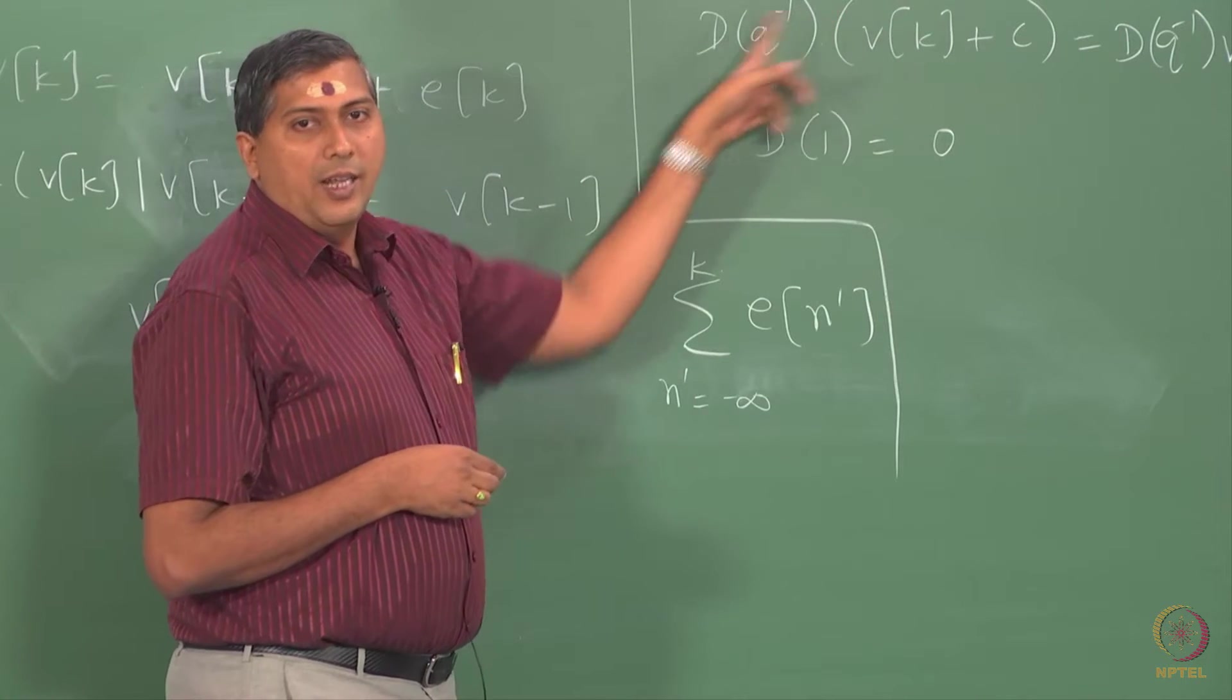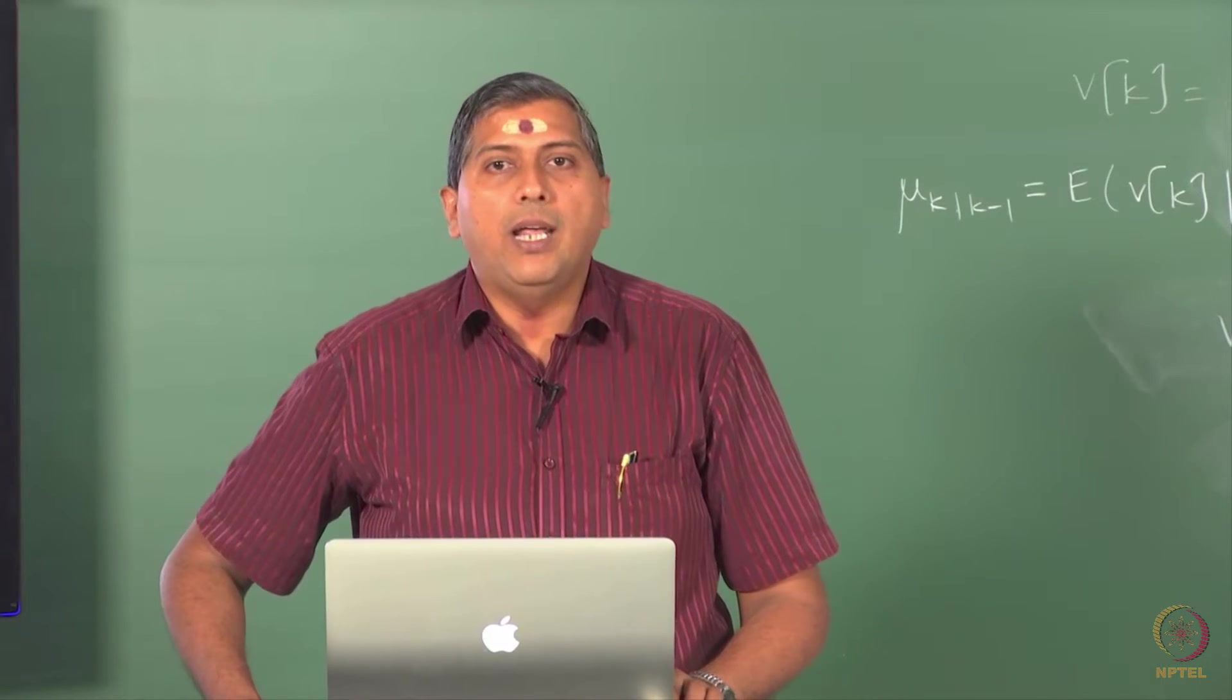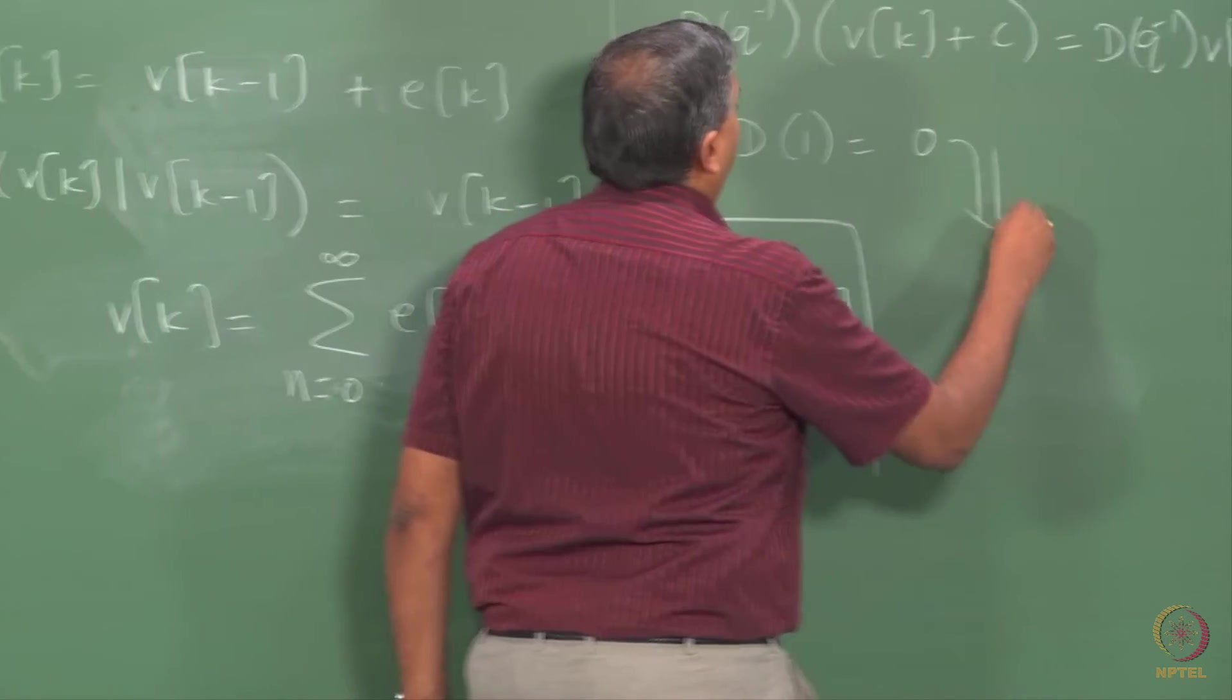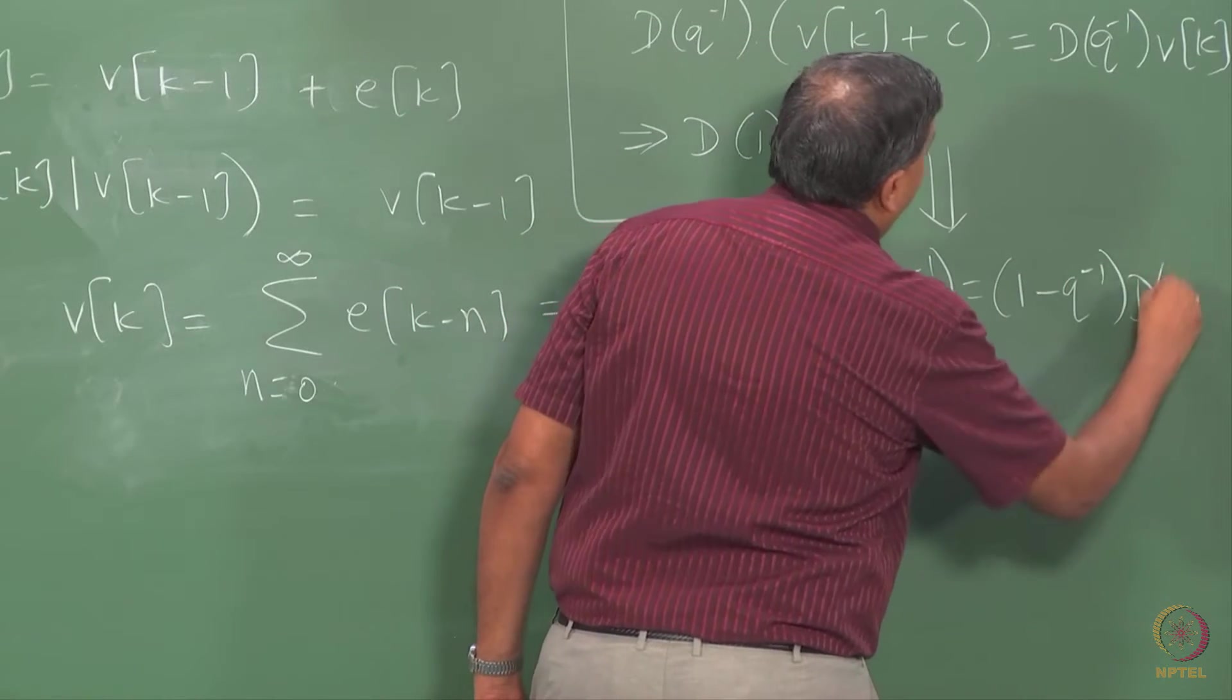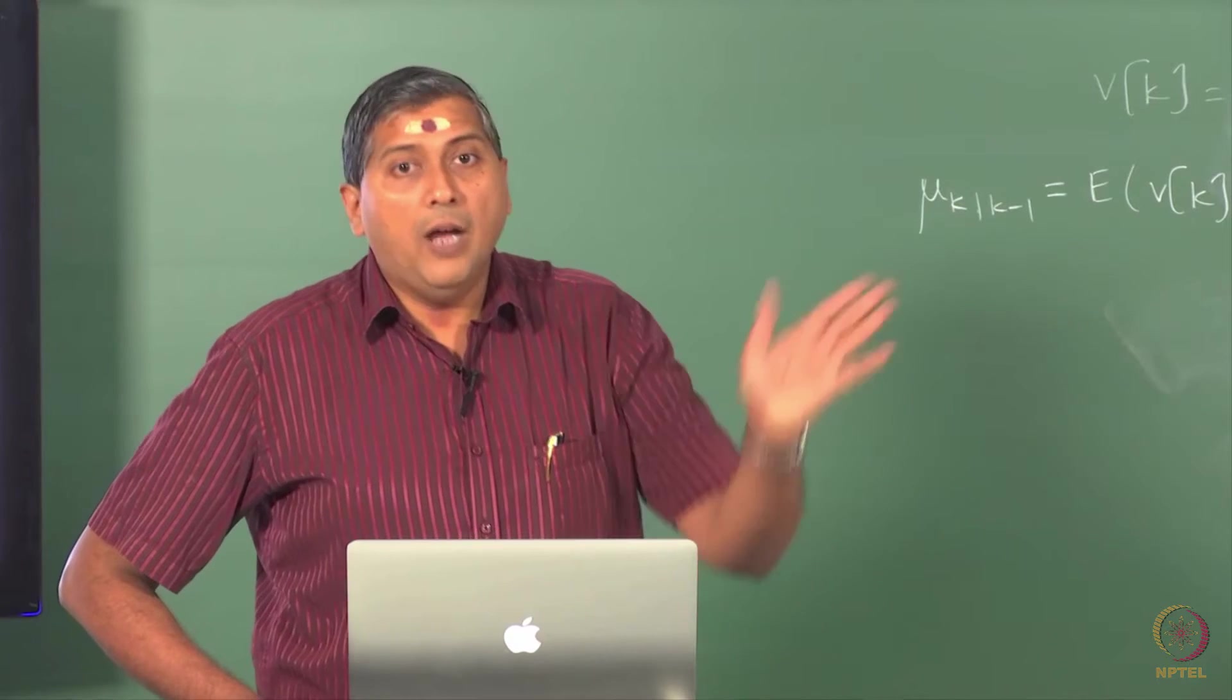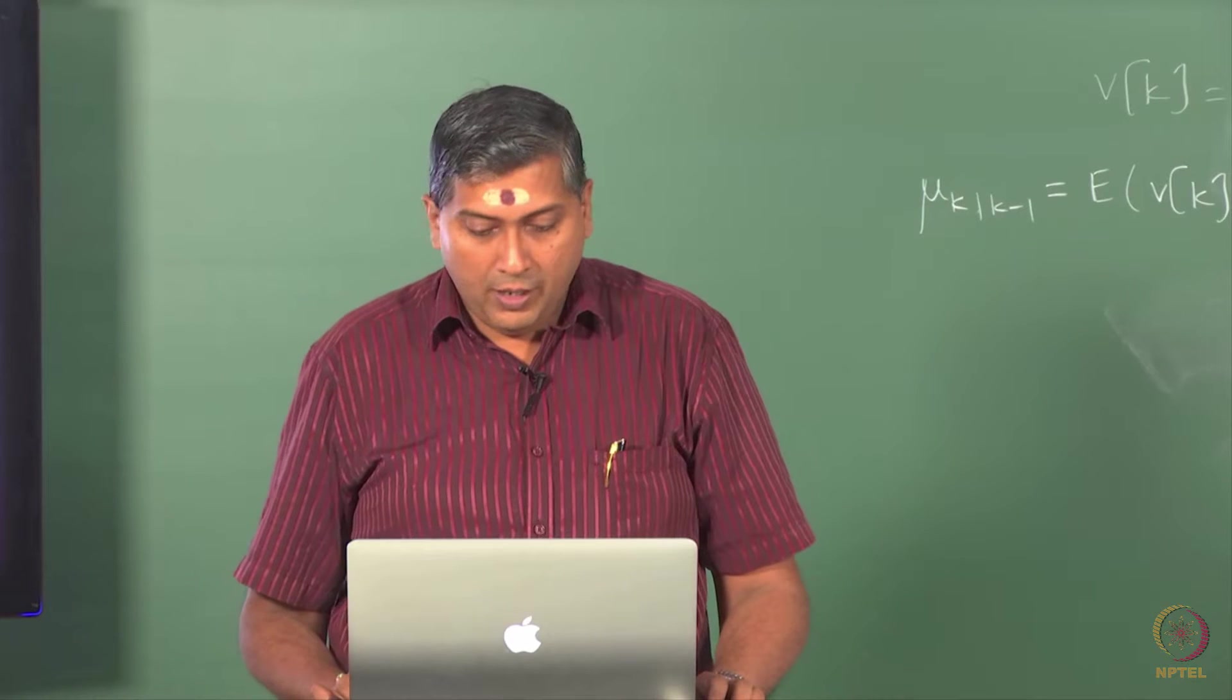You can, I leave it as a simple exercise to show that this demands that when I evaluate the polynomial with Q replaced by 1, it should turn out to be 0. That is fairly straightforward to see because you have D of Q inverse operating on C to be 0, and this should be true for all nonzero constants. So the only way this can happen is when D of 1 is 0, because D of Q inverse operating on C should be 0, C is a constant. What this means is invariably the D of Q inverse should have a factor of 1 minus Q inverse necessarily.